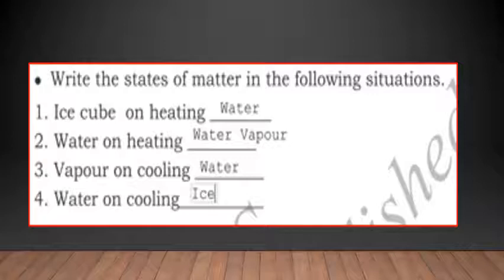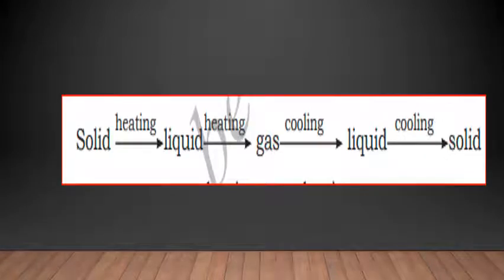Ice cube on heating is water. Water on heating becomes water vapor. Vapor on cooling is water. Water on cooling is ice. So matter changes state from one form to another due to heat. This is called the change in states of matter.